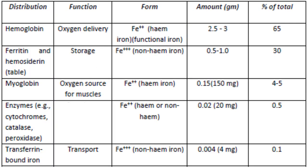Iron is mostly present in the form of hemoglobin, whose function is to carry oxygen. It is also present as ferritin and hemosiderin, whose function is to store iron; myoglobin, which is a source of oxygen for the muscle; a small percentage in important enzymes; and an even smaller percentage carried on transferrin, which is responsible for transporting iron in the body.